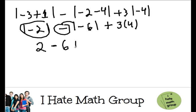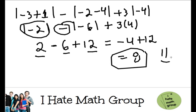Finally, 3 times 4 is going to equal 12. Now I can do 2 minus 6 plus 12. Well, let's do it like this. 2 minus 6 is negative 4 plus 12. This equals 8. And that's it.